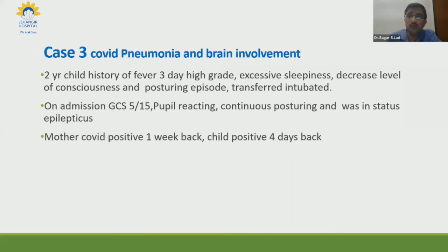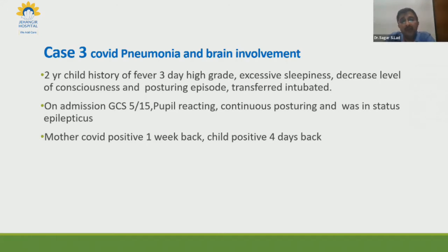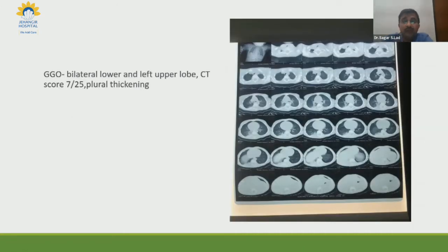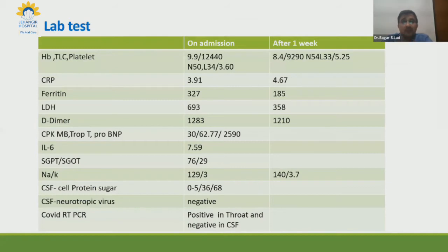The third case is a very interesting two-year-old child with high-grade fever for three days, excessive sleepiness as reported by the mother, decreased level of consciousness, and continuous posturing episodes. The child was transferred in an intubated state. On examination, GCS was five, pupils were reacting, and the child was continuously posturing — basically in status epilepticus. The mother had COVID one week prior and the child was COVID positive four days back. CT done before referral showed a score of 7 out of 25, indicating lung involvement. The child was initially intubated and ventilated with neurological involvement noted.